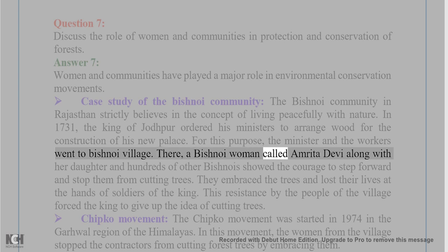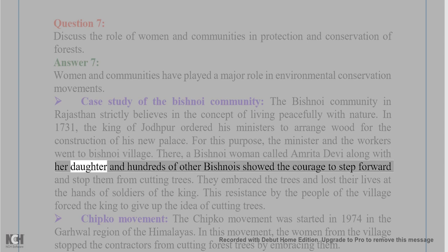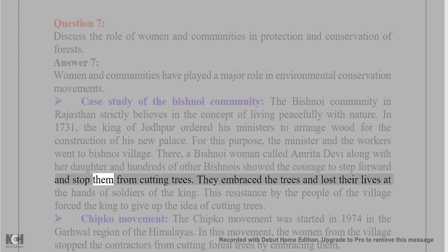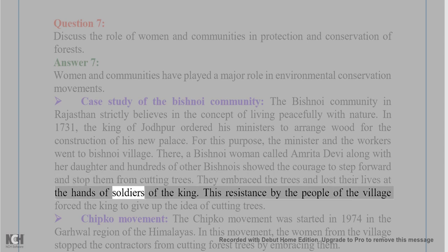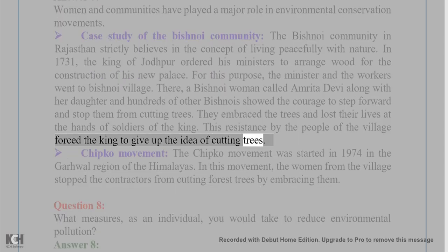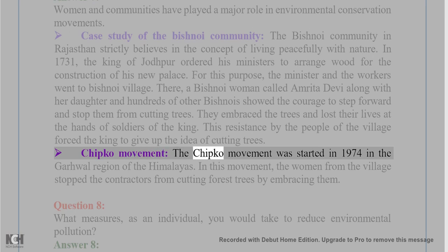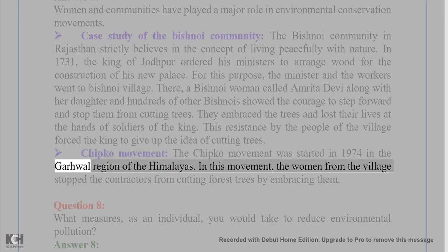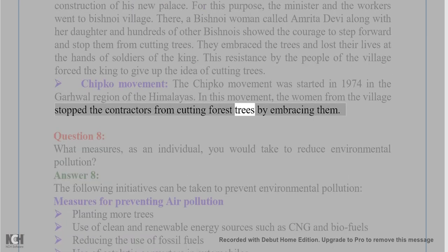A Bishnoi woman called Amrita Devi, along with her daughters and hundreds of other Bishnois, showed the courage to step forward and stop them from cutting trees. They embraced the trees and lost their lives at the hands of the king's soldiers. This resistance forced the king to give up the idea of cutting trees. The Chipko movement was started in 1974 in the Garhwal region of the Himalayas, where women from the village stopped contractors from cutting trees by embracing them.